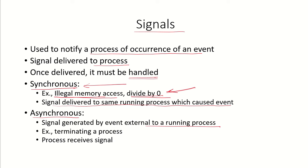Asynchronous signals are generated by an event external to a running process. One process is running, but some other external event happens and a signal is sent to that running process. For example, a parent process might want to terminate a child process — the event is caused by the parent, but the signal is sent to the child. This is an asynchronous signal.